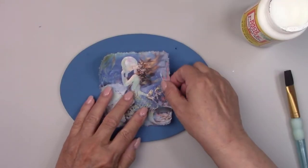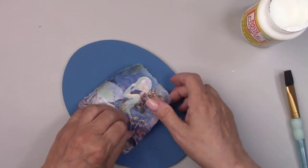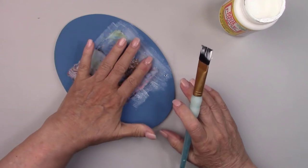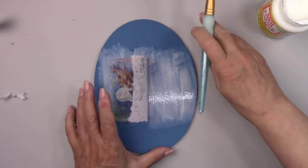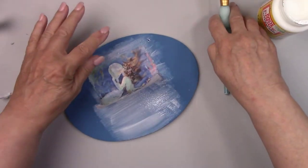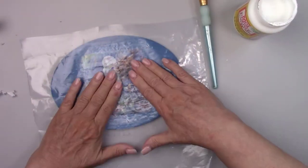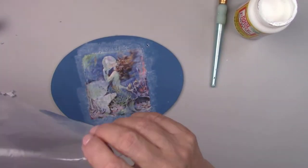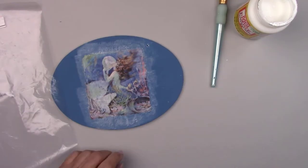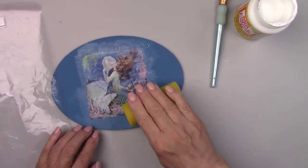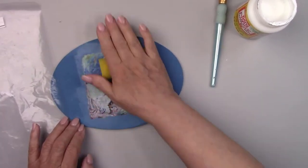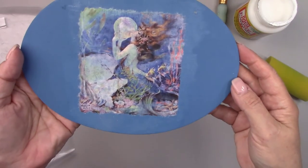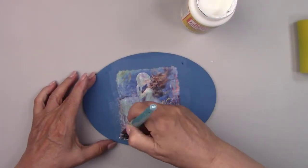Once I have the placement of the picture where I want it, I'll lift up the top again and add the Mod Podge then lift up the bottom and add the Mod Podge there as well. It's a little sticky so I'm using a piece of plastic to cover the picture as I smooth it down. Then I'll roll it with a sponge to remove any air bubbles. After it's dry, I'll add a coat of Mod Podge over the picture to seal it.